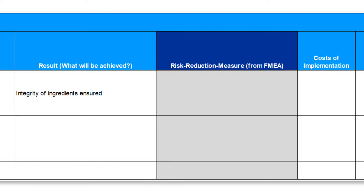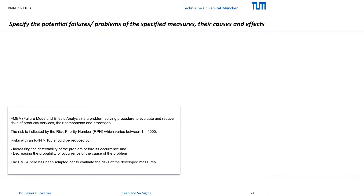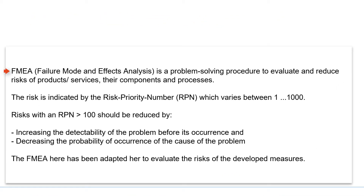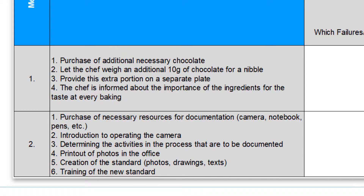The next column shows a risk reduction measure resulting from the FMEA. Since you can only fill in the next details in the action list when you have completed an FMEA, I would like to briefly introduce this next tool of the SigmaGuide. The FMEA, failure mode and effects analysis, is in itself a complete problem-solving method. It is often used as a standalone tool in many technical areas to eliminate the risks of complete products and services or their components. The purpose of the FMEA in Six Sigma is to reduce the risks of measures before they are implemented; thus, the measures are the starting point for us in the first columns of the FMEA.